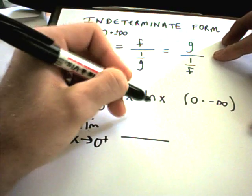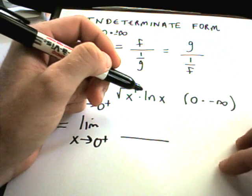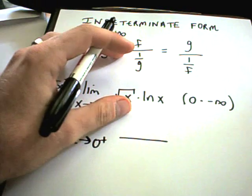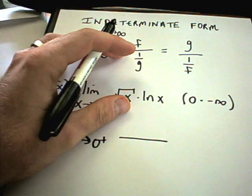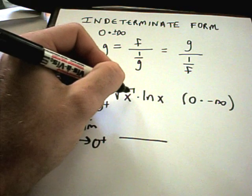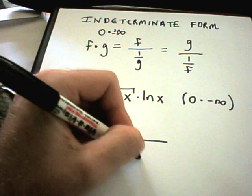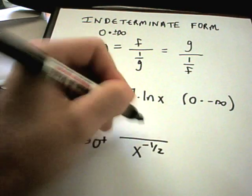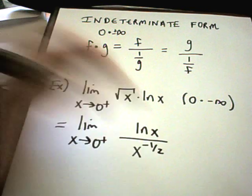I could either take 1 over ln of x and put that in the bottom, but I think when you go and start taking derivatives, you're going to find that gives you a slightly more complicated expression. So my x to the 1/2, I'm going to move him to the denominator and make it x to the negative 1/2 times ln of x.